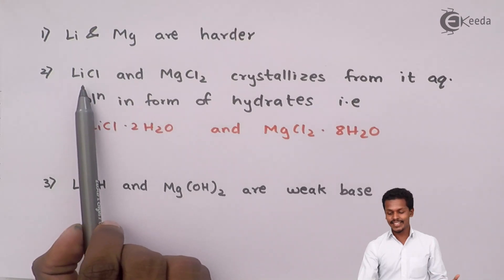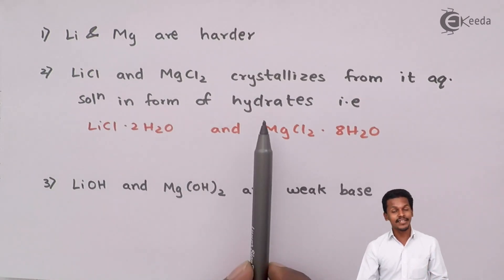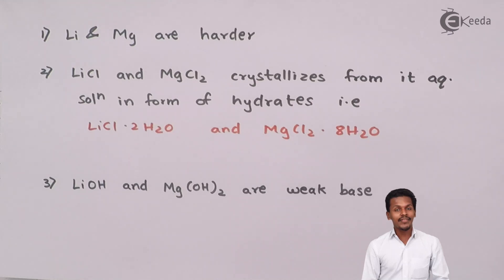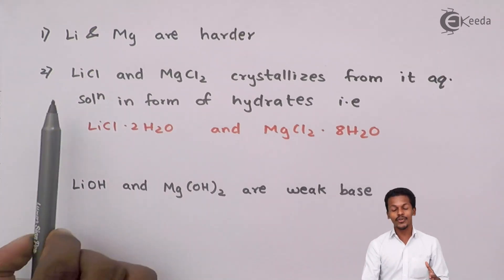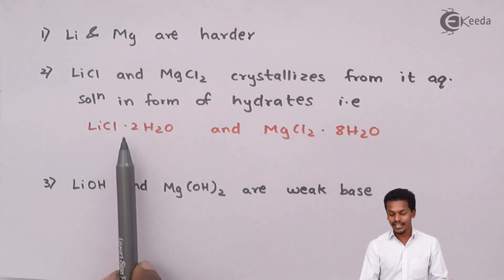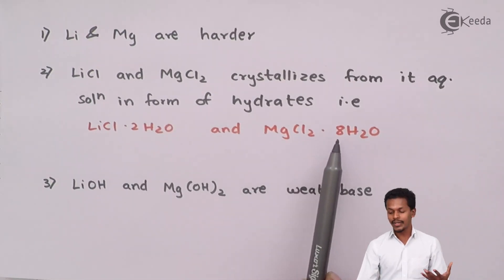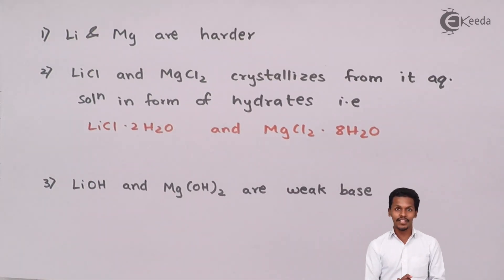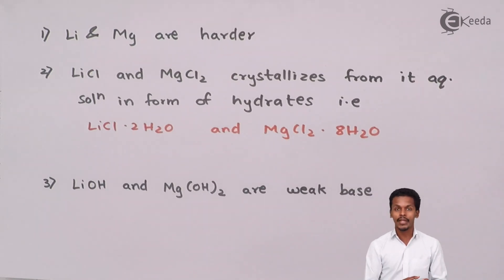The salts LiCl and MgCl₂ are crystallized from their aqueous solutions in the form of hydrates. When we compare this with NaCl — NaCl obtained from its aqueous solution does not form a hydrate; it gives NaCl itself. But lithium, belonging to group 1, forms the hydrate LiCl·2H₂O, while MgCl₂ forms the hydrate MgCl₂·8H₂O. This similar property of hydrate formation creates a relationship between lithium and magnesium, and is part of why we talk about their diagonal relationship.